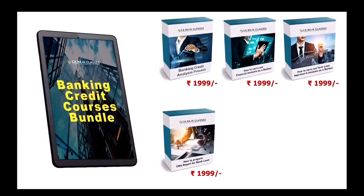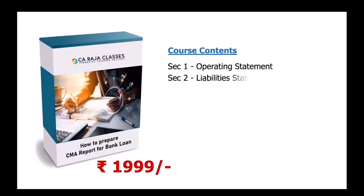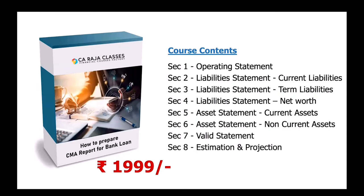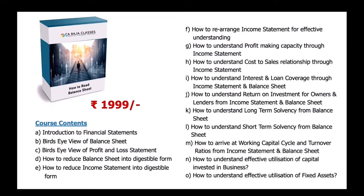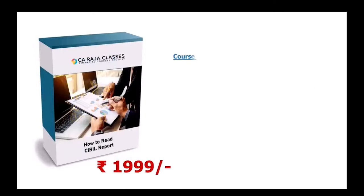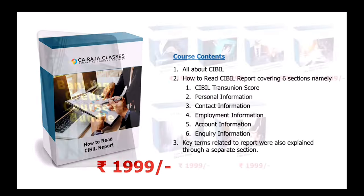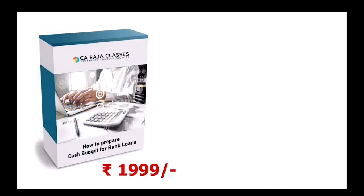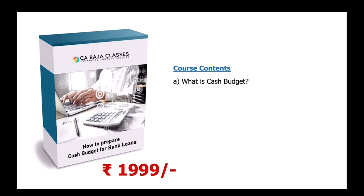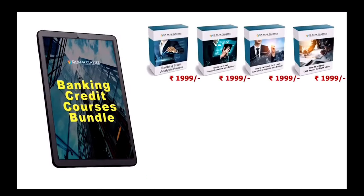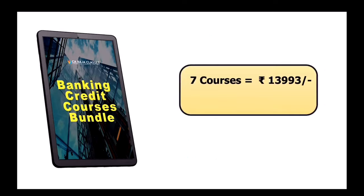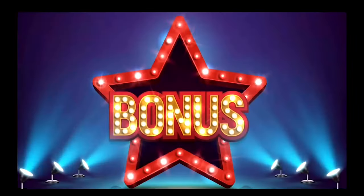Then comes course number four, how to prepare CMA report for bank loan through eight sections. This course will take you through entire CMA report preparation process for bank loans. Then we have course number five, how to read balance sheet. So if you are a non-finance person, this course will give you complete insight into balance sheet, how to read them, how to interpret them, how to analyze them. Then we have course number six, how to read CMA report. By taking this course, you will get a complete picture of CMA report reading process. Then we have course number seven, how to prepare cash budget for bank loans. This course will help you to understand the concept of cash budget, which is widely used in short term lending, like auto credit facilities, letter of credit and all. So far, I have introduced seven courses of 1999 each. It means seven courses of value 13,993, but you are going to get it only for 2599. And it is not yet over. I'm going to give you some more bonus.